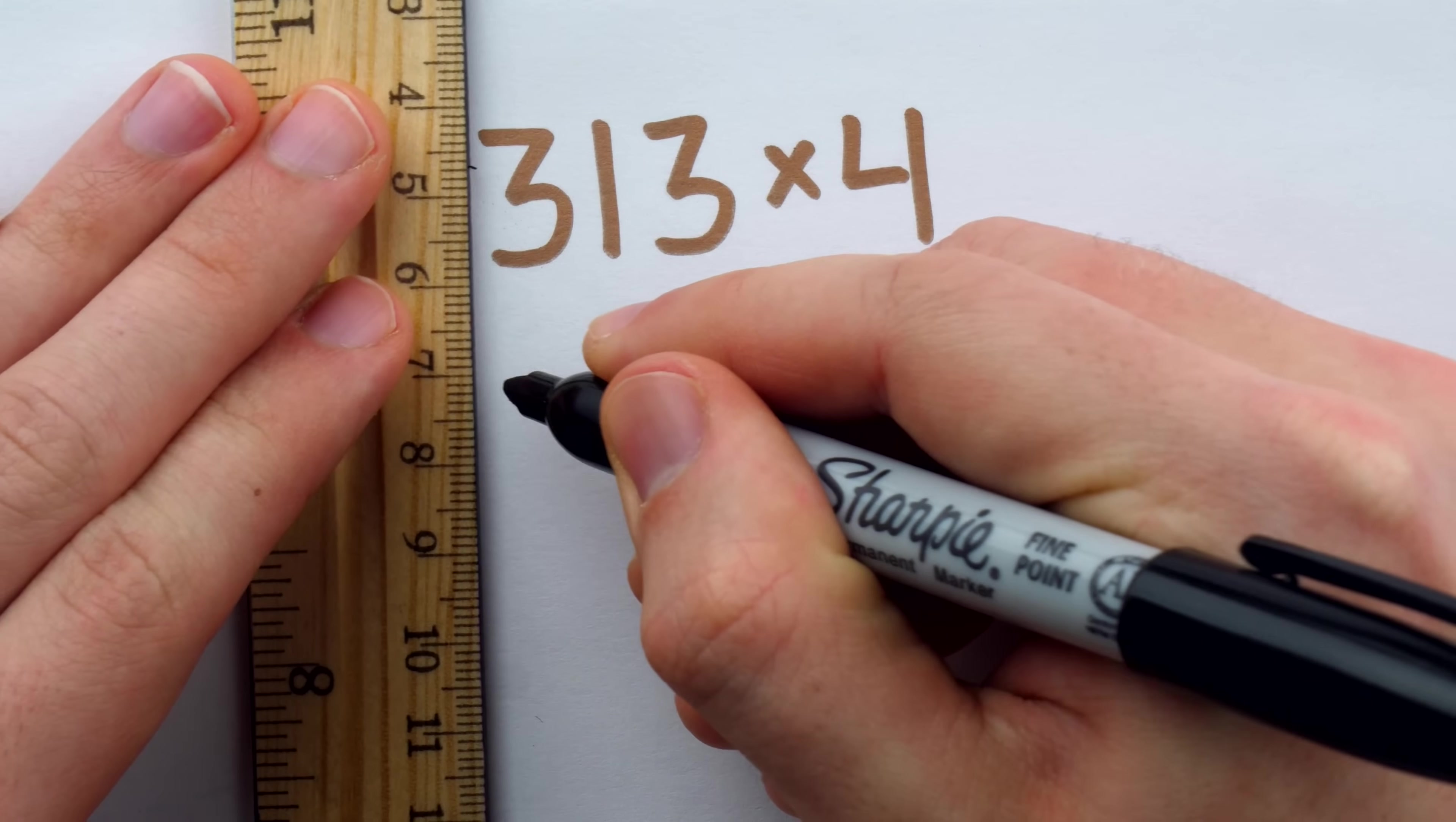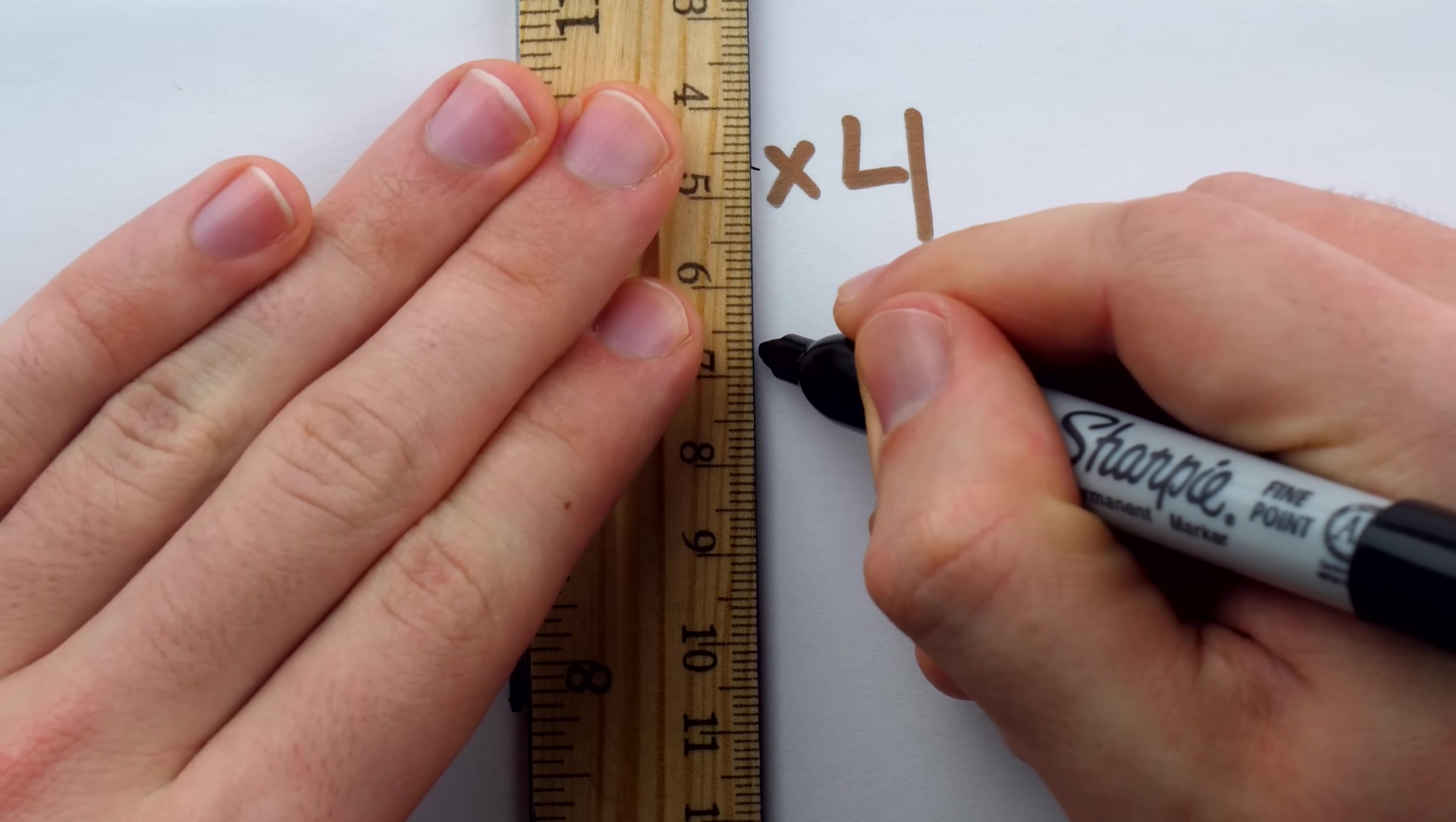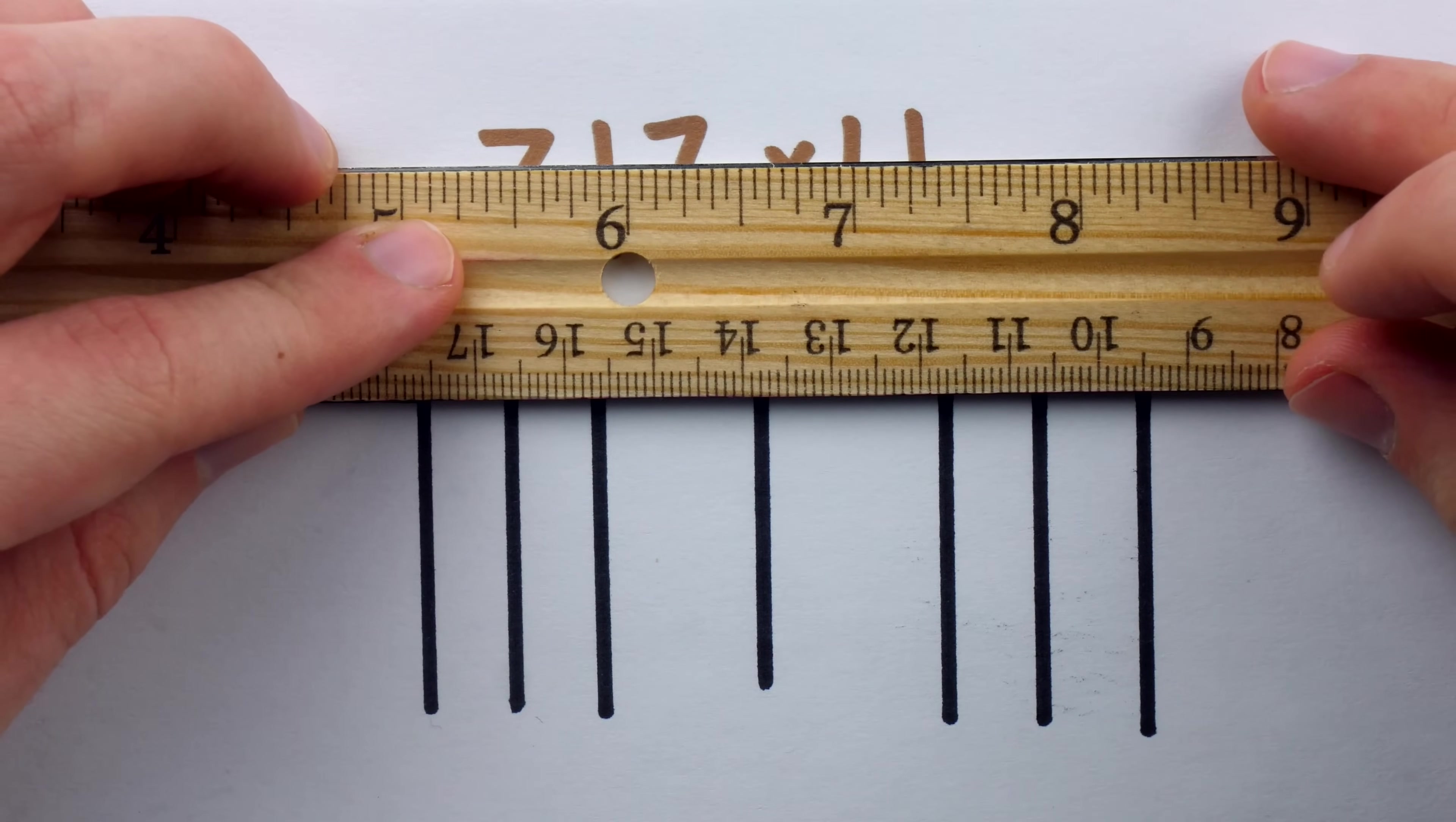Again, to do this, we would draw three vertical lines for the three hundreds, and then give some space and draw the one vertical line for the 10, and then give some space and draw three vertical lines for the three units, and then draw four horizontal lines crossing these.